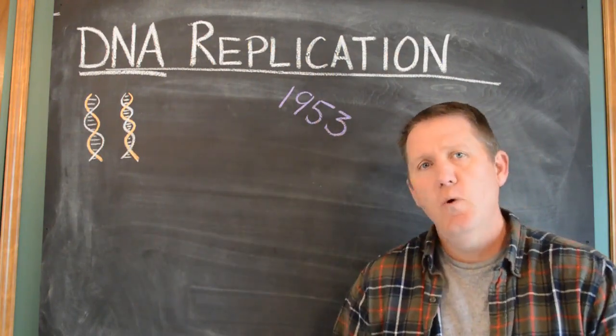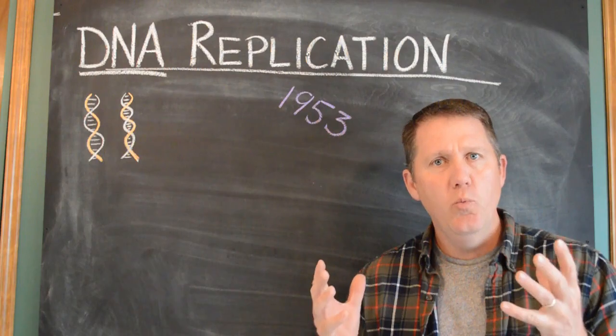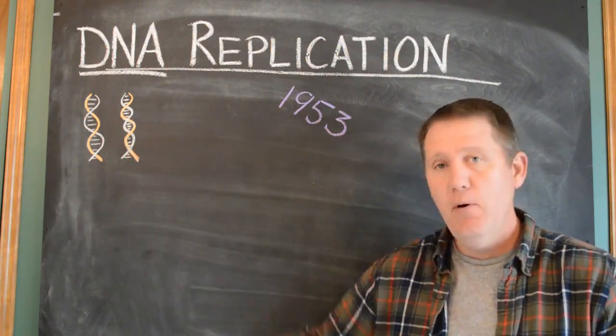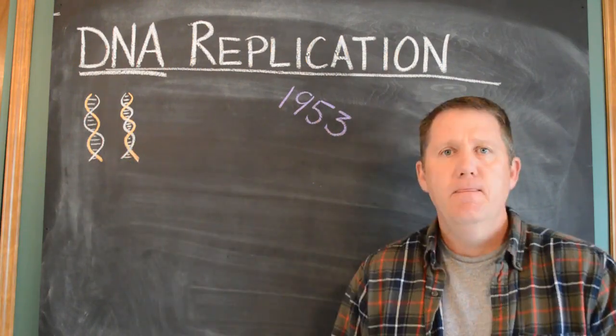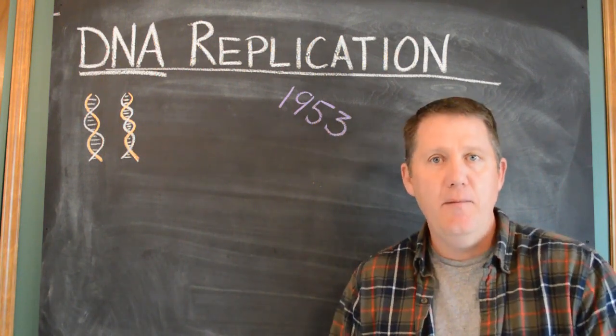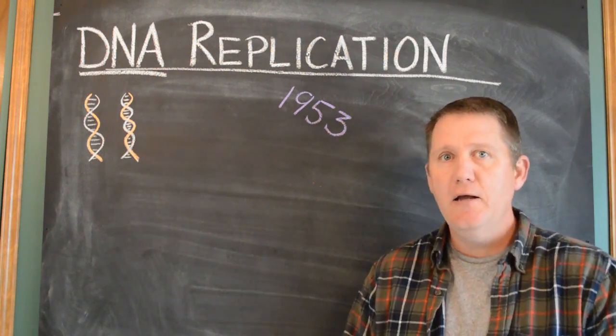Back in 1953 when Watson and Crick described what DNA looked like and came up with a model, they also described how they thought DNA copied itself. They were pretty dang close.